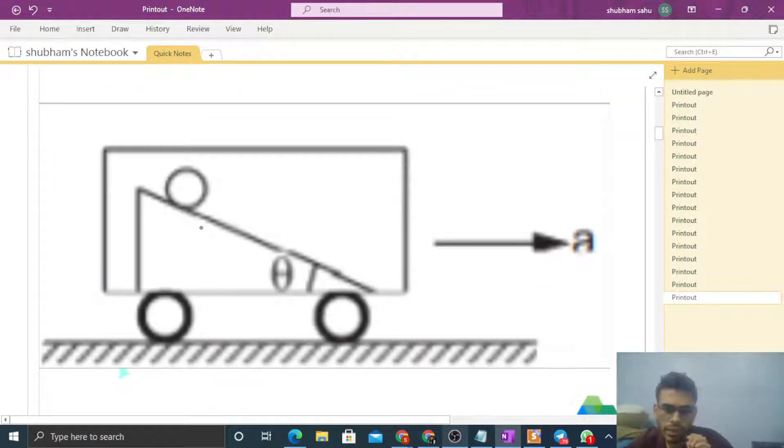So we will make the free body diagram from the frame of reference of the car. From the car's frame we will see the rolling. If you look from the ground, you will see the motion of the car because the car is accelerating anyway. So this is the free body diagram we draw.